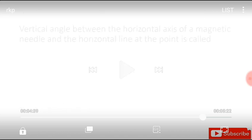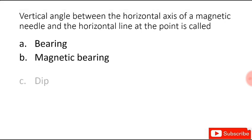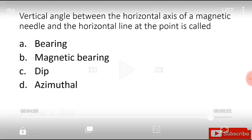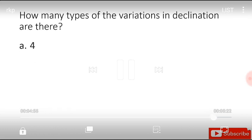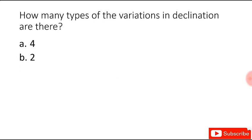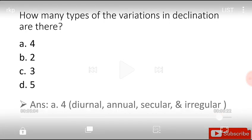Vertical angle between the horizontal axis of magnetic needle and the horizontal line at the point is called bearing, magnetic bearing, dip, or azimuthal. The answer is dip. How many types of variations in declination are there? Four, two, three, or five. The answer is four: diurnal that is daily, annual that is yearly, secular, and irregular variations.